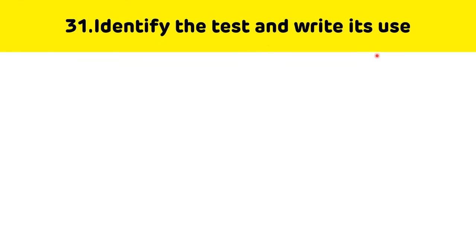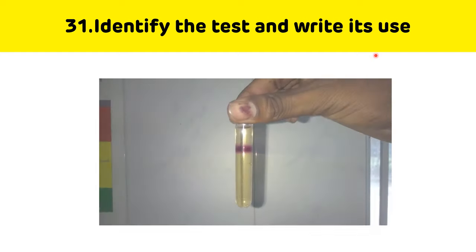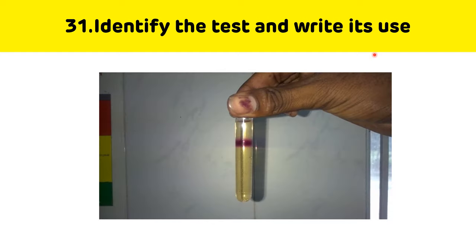Identify the test and write its use. This is the Rothera's test, which is done for the detection of ketone bodies in a given sample, specifically in urine. Ketone bodies are seen in cases of starvation and diabetic ketoacidosis.